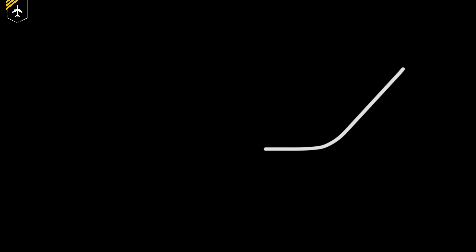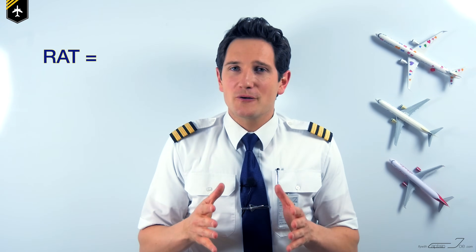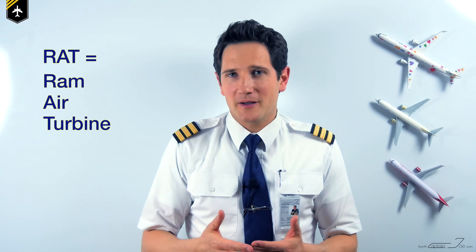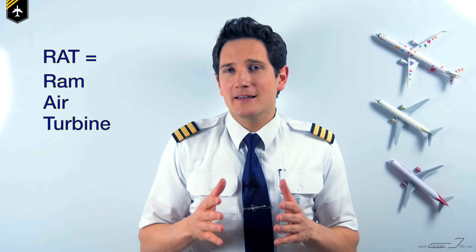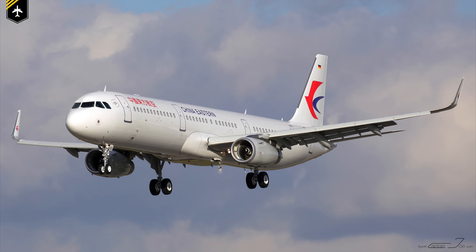Dear friends and followers, welcome back to my channel. Today's video covers another very important question: What is the RAT? So let's get right to it. Get your notebook out. RAT is short for Ram Air Turbine, and a RAT is one of the things you rarely see on an airplane. Let's cover some basics first, and then we'll use an Airbus A320 as an example.